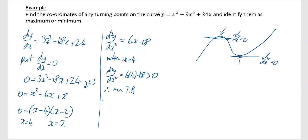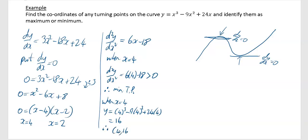We also need the corresponding y-value. When x equals 4, substituting back into the original equation gives 4 cubed minus 9 times 4 squared plus 24 times 4, which equals 16. So the point (4, 16) is a minimum turning point.